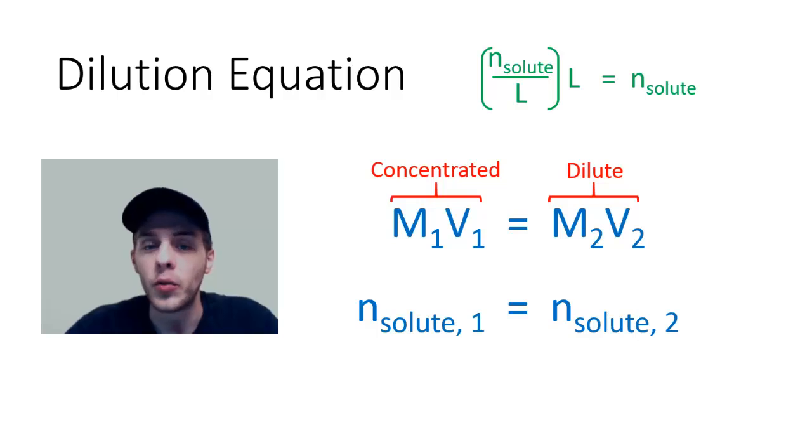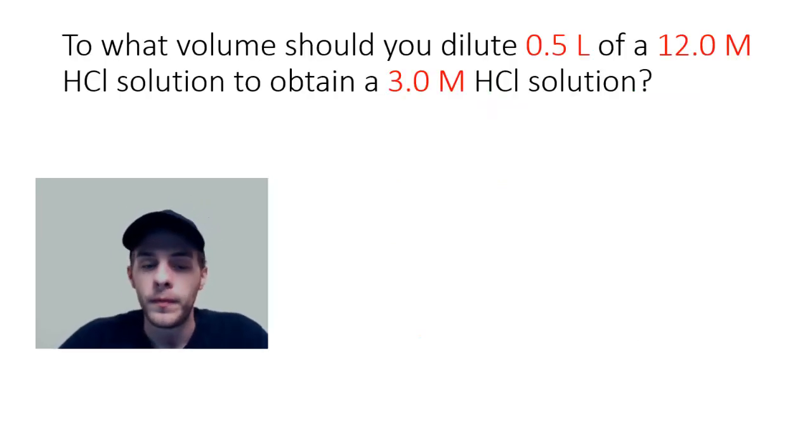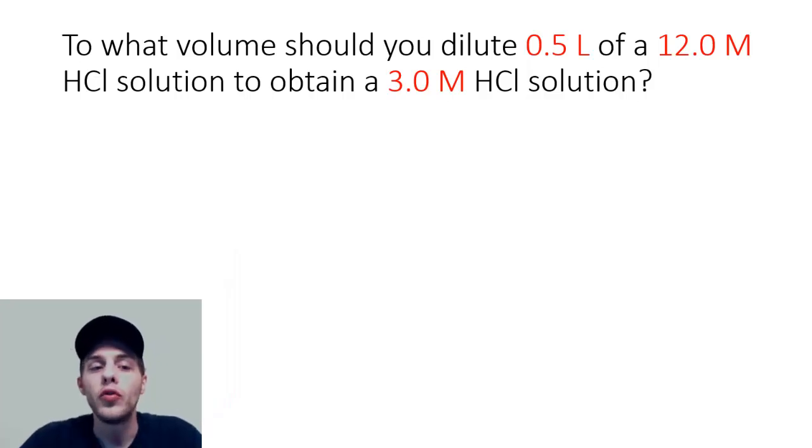In the next slide we're going to look at a problem in which we use this formula and then algebraically solve for what we're trying to figure out. This problem says: to what volume should you dilute 0.5 liters of a 12.0 molar HCl solution to obtain a 3.0 molar HCl solution?